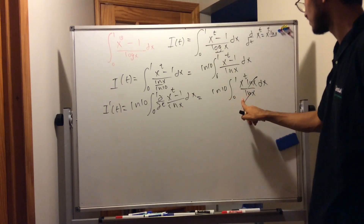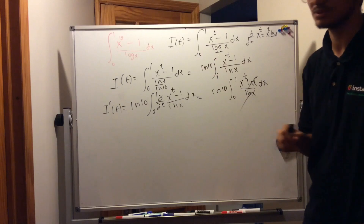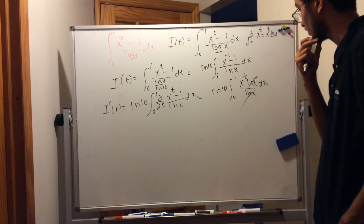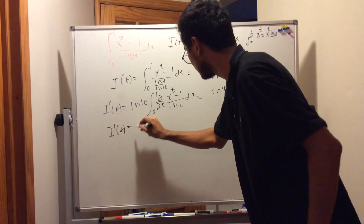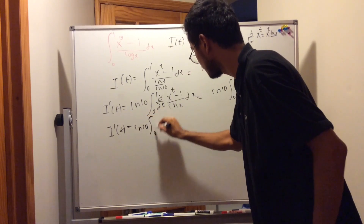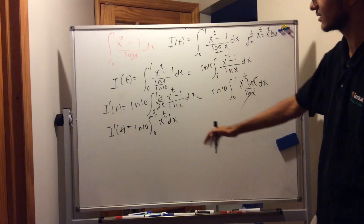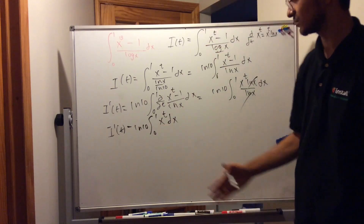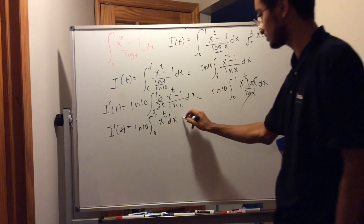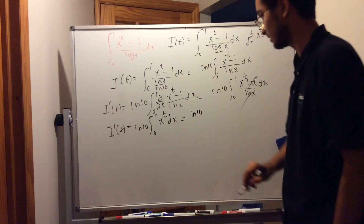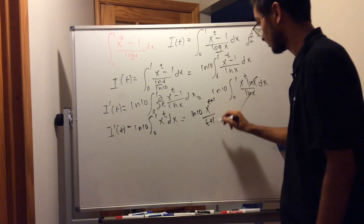Now we have a new defined function: i'(t), the first derivative of i(t) with respect to t. So i'(t) is equal to ln(10) times the integral from 0 to 1 of x to the power of t, dx. We can evaluate this integral — it's a lot easier. Integrating in terms of x, this equals ln(10) times x to the power of t plus 1, divided by t plus 1, evaluated from 0 to 1.